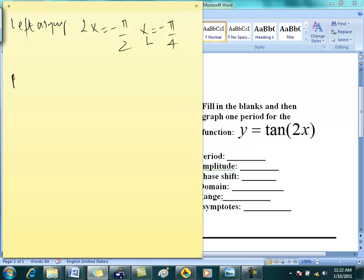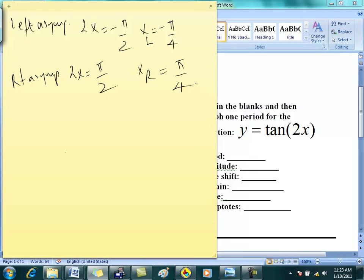Your right asymptote comes from setting 2x equals +π/2. Solve that and you get x right equals π/4. Okay?